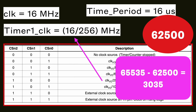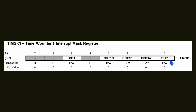Once the timer overflows, we need to enable the timer overflow interrupt. We use the Timer/Counter 1 Interrupt Mask Register (TIMSK1) to enable the Timer Overflow Interrupt Enable bit. This bit is the timer overflow interrupt enable flag.